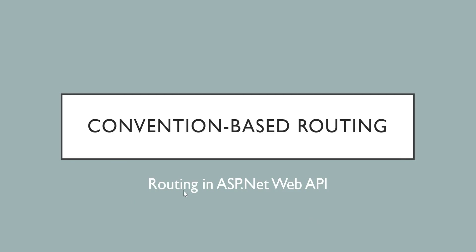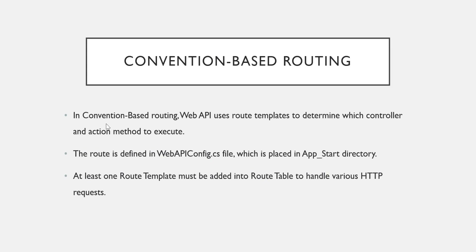Hello friends, welcome back. We are studying routing in ASP.NET Web API. This video is all about convention-based routing, which is one of the types of routing that ASP.NET Web API supports. Convention-based routing is basically a traditional way of specifying the route templates. Web API uses the route templates to determine which controller and which action method to execute.